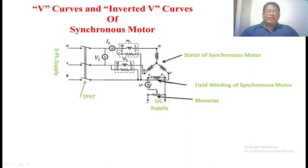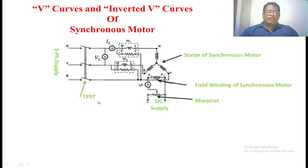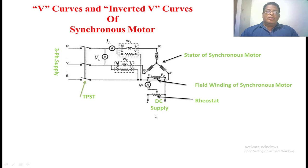Without giving the DC excitation to the rotor of the synchronous motor, first we have to apply the 3-phase supply by closing the TPST switch. The rotating magnetic field is created from the stator winding, and by external means it rotates the rotor in the same direction as the stator flux, near to synchronous speed. Then we give field excitation to the rotor through the potential divider, so the flux created from the rotor synchronizes with the stator flux and the rotor runs at synchronous speed.